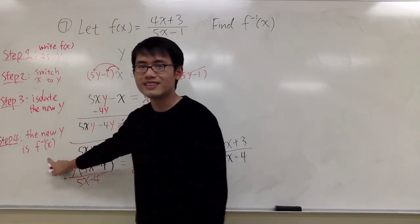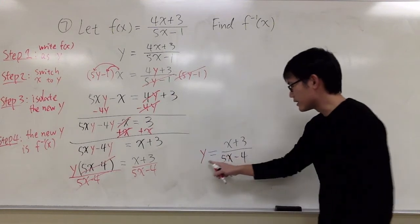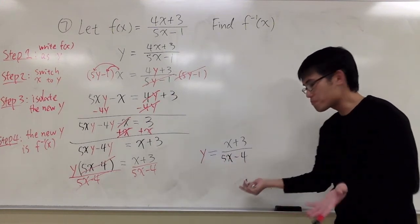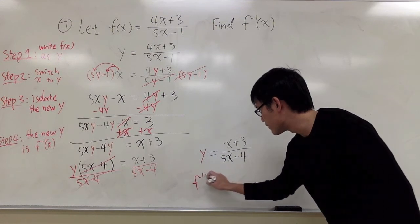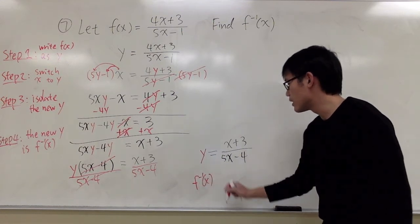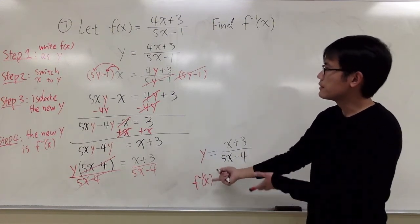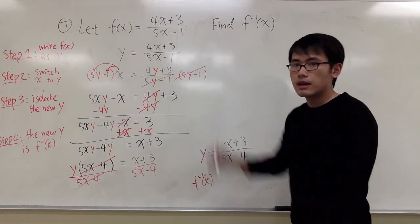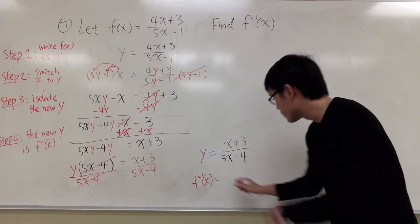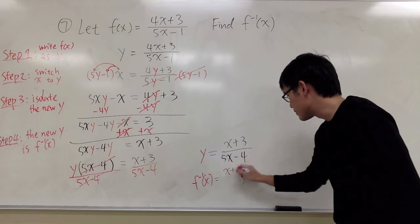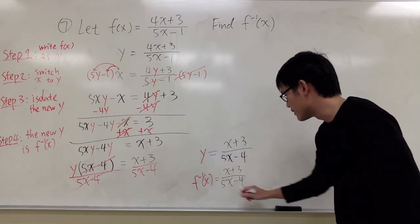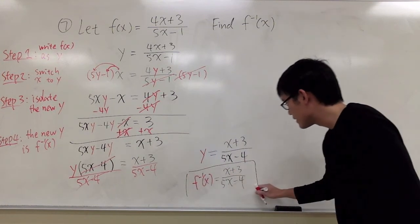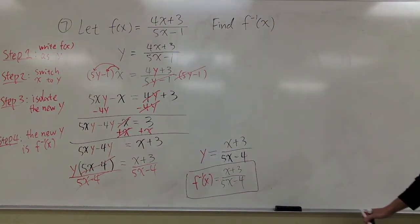The inverse of the original function. So right here, I isolate the y, and I will say, the final answer, I will replace that with my inverse function notation. f inverse, the inverse of the original function, is equal to that. x plus 3 over 5x minus 4. So, and that's it.